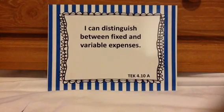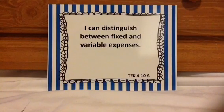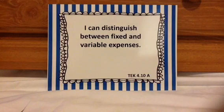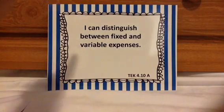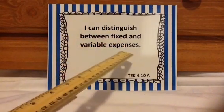Let's look at TEEC 4.10a. It says: I can distinguish between fixed and variable expenses. This is part of the financial literacy unit. It talks about budgeting, savings options, expenses, calculating profit, and things like that. So this is quite different than fractions and geometry and adding and subtracting. Distinguish means knowing the difference — between fixed and variable expenses.